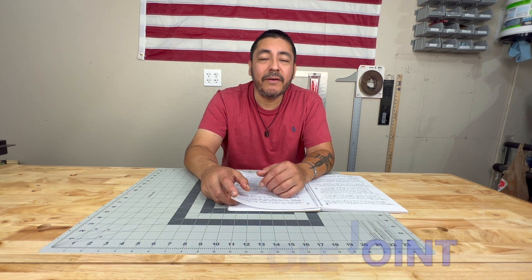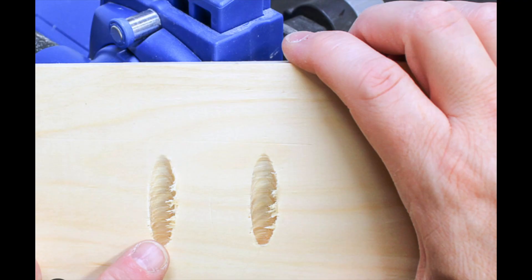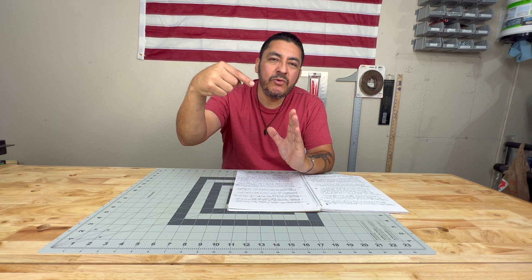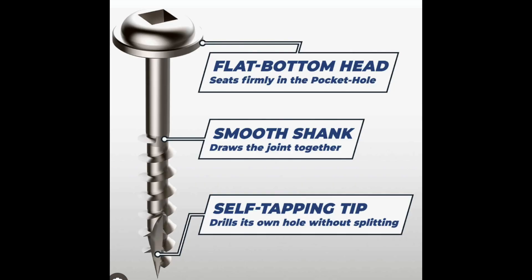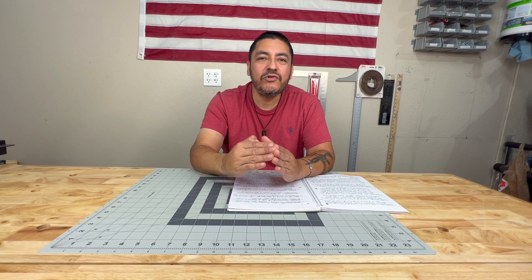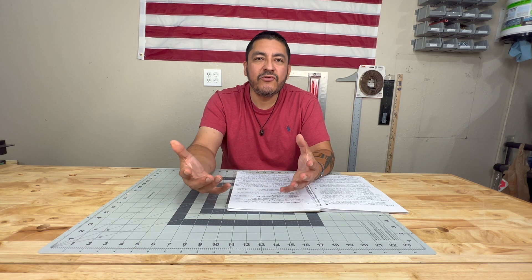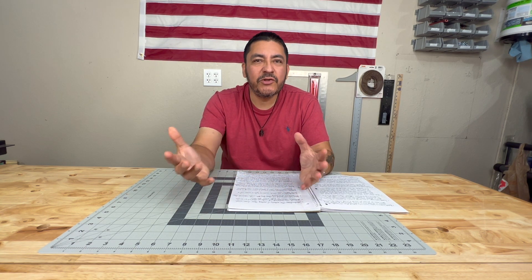Pocket hole joint. A pocket hole is a hole that's normally drilled at about a 15-degree angle from one piece of wood into another. You fasten both pieces with a special pocket hole screw that brings them nice and tight together — that's a pocket hole joint. You can use glue along with the pocket hole screws, or just the screws themselves.